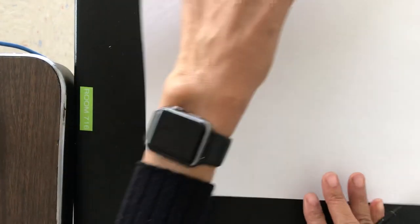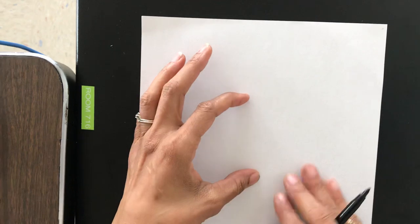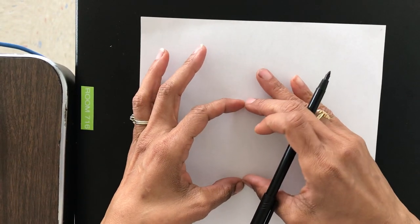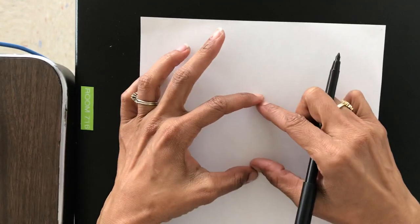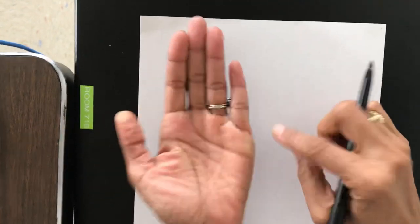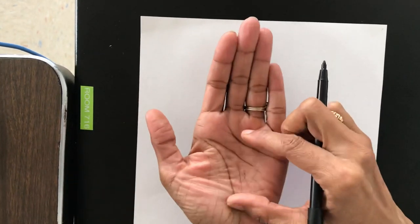You're going to start with your paper being portrait way, not landscape. You're going to draw in the middle of your paper. If this is the center, you're going to go up a little bit and make a circle about the size of your hand, like you're fitting a little ball in your hand.